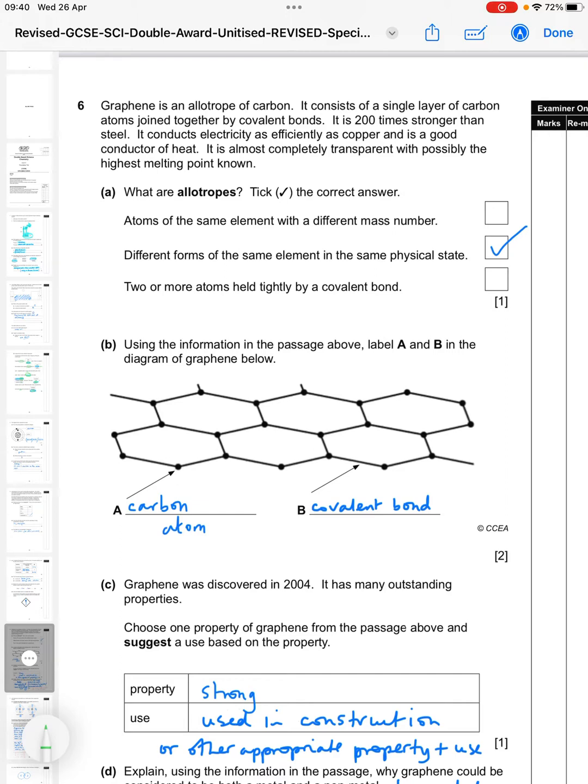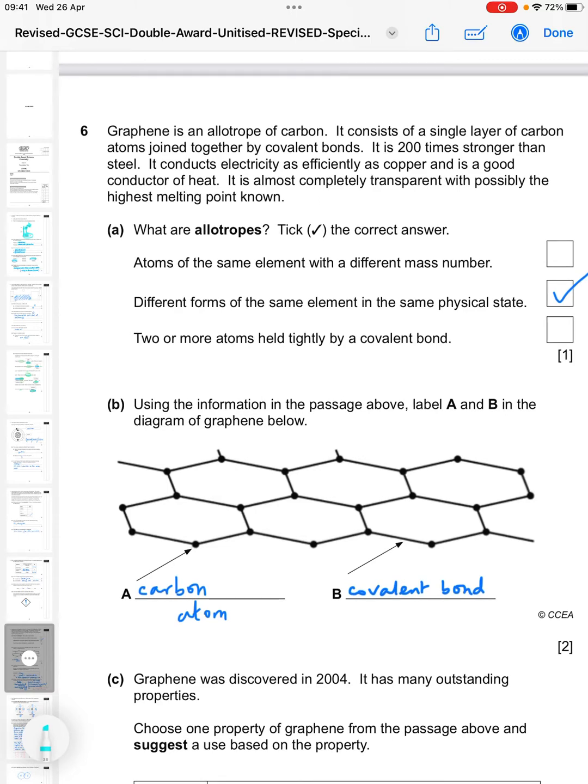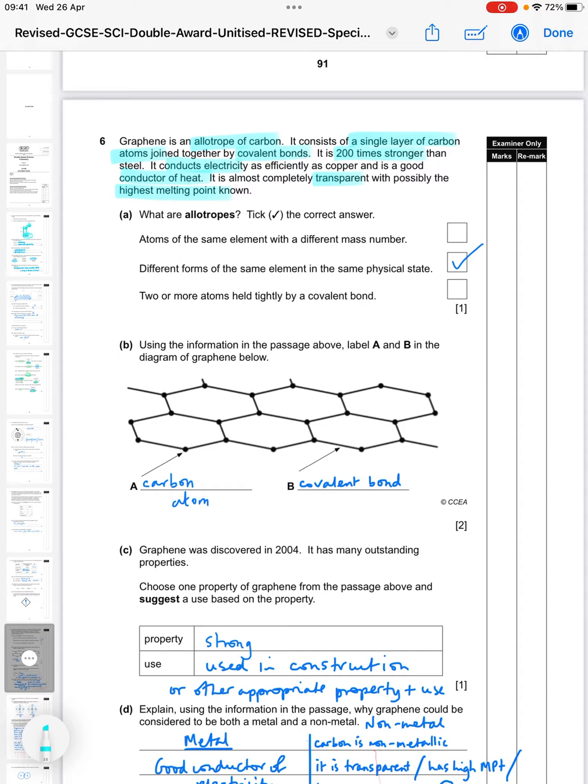Another question about nanoparticles, but this time it's about graphene. Graphene is an allotrope of carbon. It consists of a single layer of carbon atoms joined by covalent bonds. It's 200 times stronger than steel. It conducts electricity as efficiently as copper and is a good conductor of heat. It's almost completely transparent with possibly the highest melting point known. So I'm going to highlight what I think are important points - it's an allotrope of carbon, single layer of carbon atoms, covalent bonds, 200 times stronger than steel, conducts electricity, and is a good conductor of heat. And it's almost completely transparent with the highest melting point known.